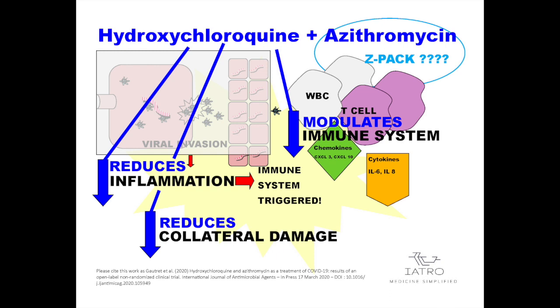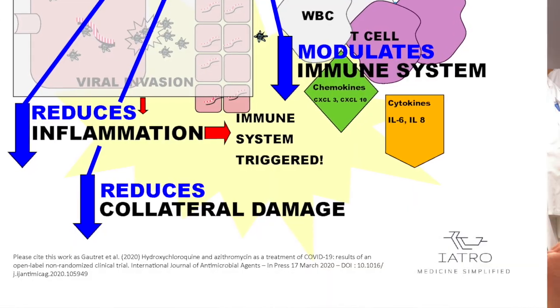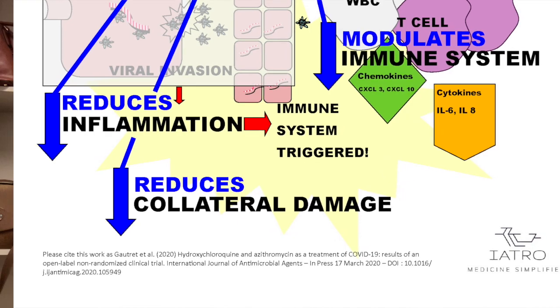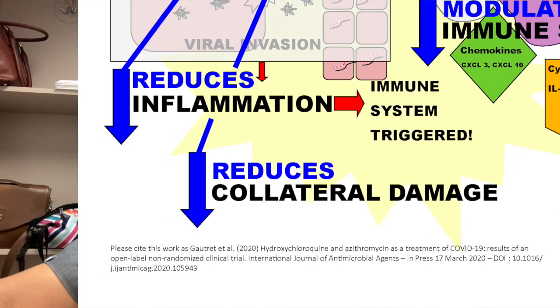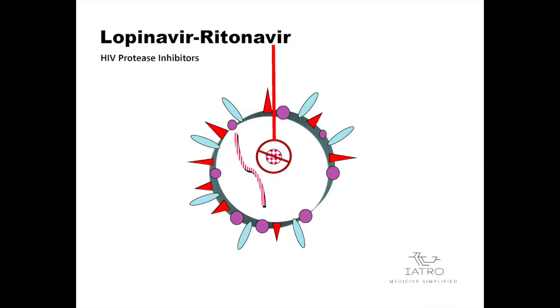One study out of France added azithromycin — a Z-pack — to hydroxychloroquine. Azithromycin is used for bacterial infections but also has anti-inflammatory properties. They combined hydroxychloroquine plus azithromycin to see a difference — maybe it works, maybe it doesn't; supposedly it did for them. Another combination is lopinavir and ritonavir — HIV drugs combined into one regimen. These are HIV protease inhibitors. Proteases are the workhorses inside the virus responsible for taking the RNA, replicating it, and getting everything organized inside the virus.